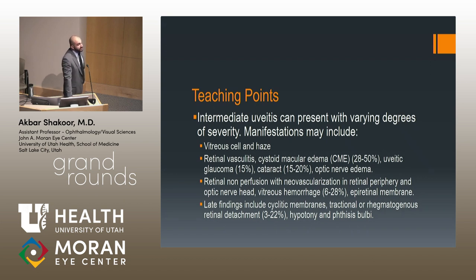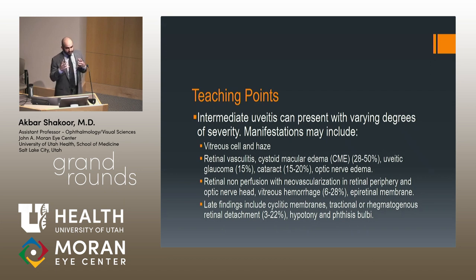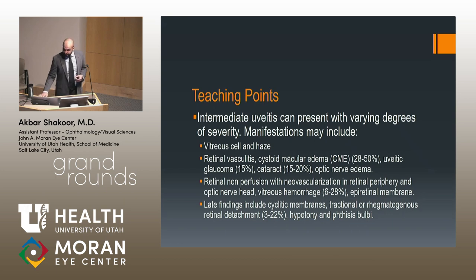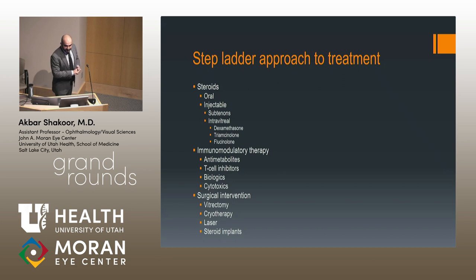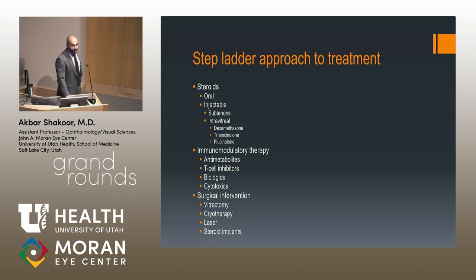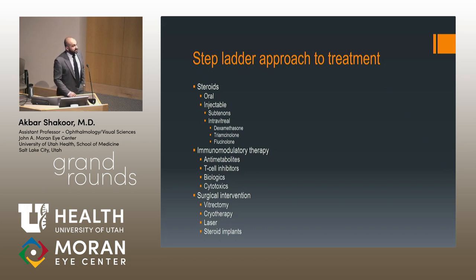There are two main presentations of intermediate uveitis: the indolent, quiet kind which may not require treatment, and — especially in children — a severe form with bad traction at the ciliary body, cyclitic membranes, early hypotony, and vitreous membranes that require more aggressive treatment. We utilize a stepladder approach: starting with steroids — oral, injectable, sub-Tenon's, or intravitreal — then immunomodulatory therapy, which you should not be shy about starting in chronic disease. Anti-metabolites, T-cell inhibitors, biologics, and cytotoxics may all be used.